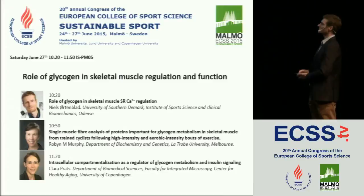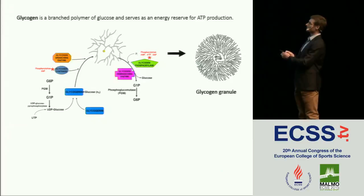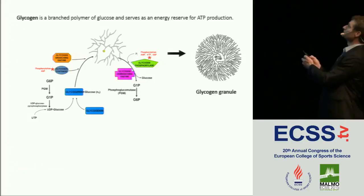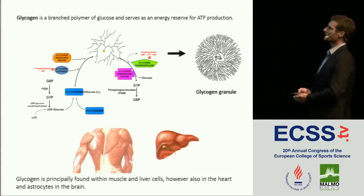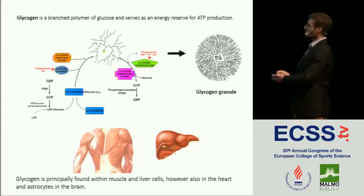Glycogen is actually a branched polymer of glucose. All these glucose monomers are built together in this branched structure by different enzymes — glycogen synthase and branching enzymes — and it's degraded by debranching enzymes and glycogen phosphorylase. It forms this glycogen granule, which is located in different places in the muscle cell. We have most of our glycogen in skeletal muscle, but also in the liver, which serves to maintain blood glucose levels, and it's also found in the heart and in the brain, in astrocytes and other cell types.